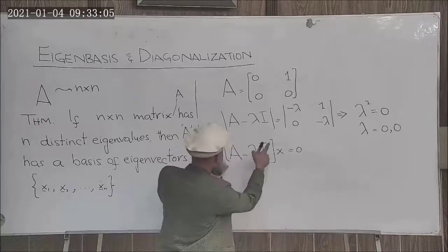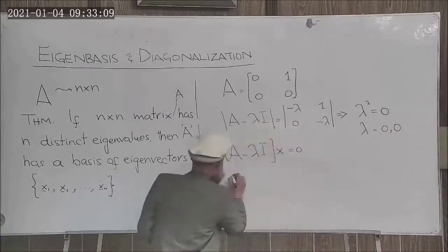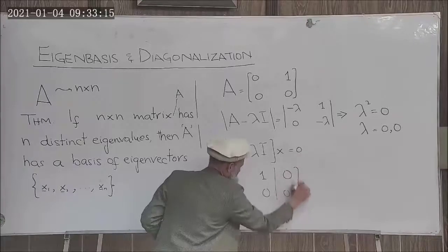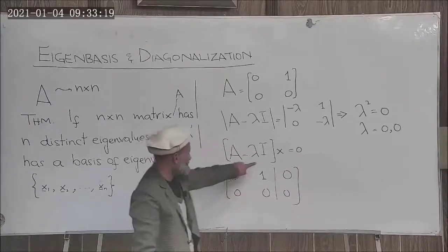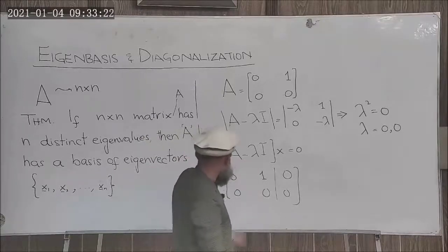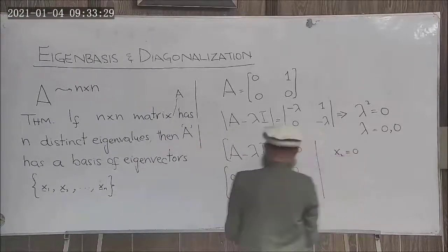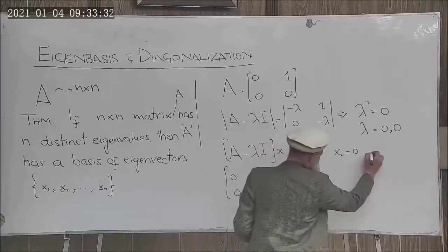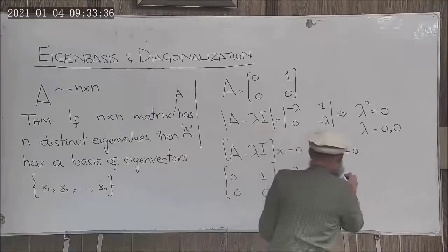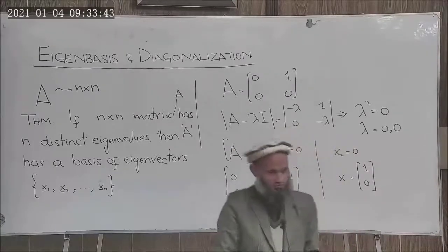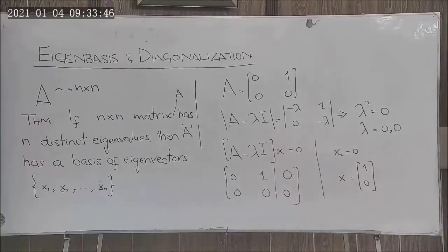Corresponding to these eigenvalues we can determine eigenvectors. We construct the augmented matrix (A minus lambda I) corresponding to lambda equal to zero. This is already in echelon form, so we get x2 equal to zero, and x1 can be any real number, giving us only one eigenvector.